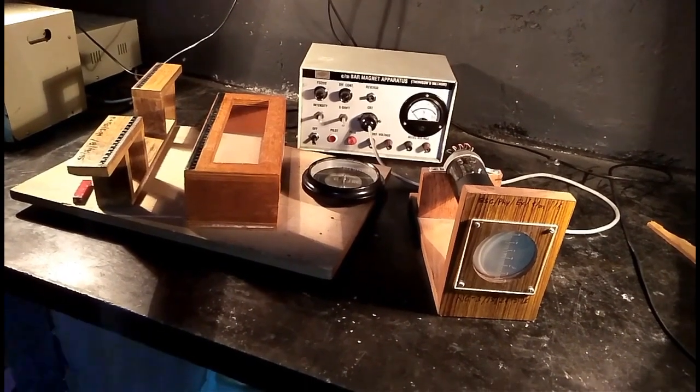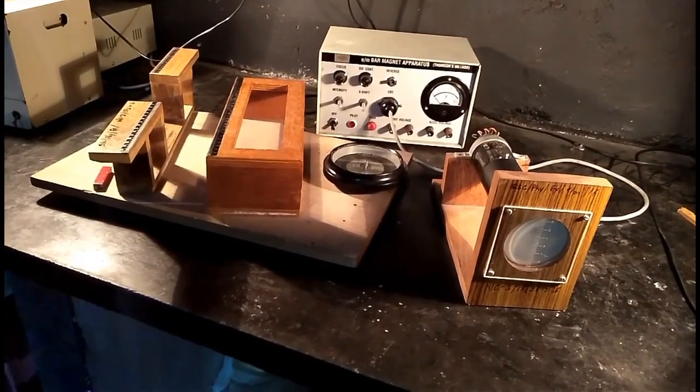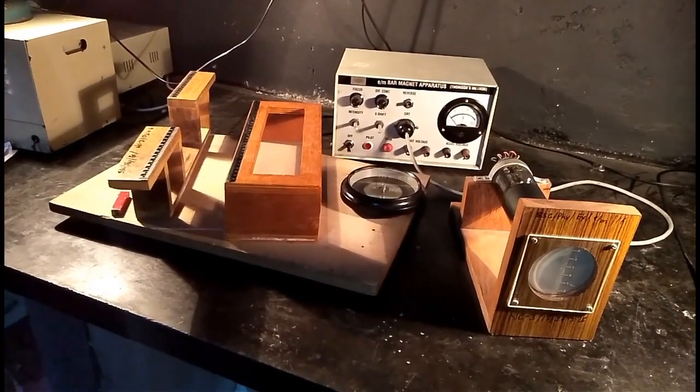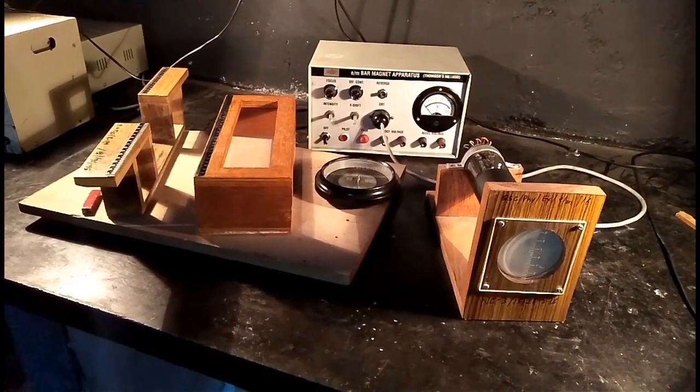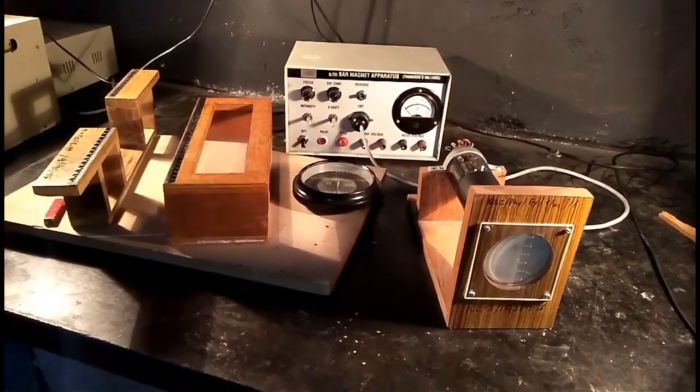Method for Determination of Specific Charge E/M by Thomson's Bar Magnet Method. The specific charge of electron is the ratio of charge on electron to the mass of electron.